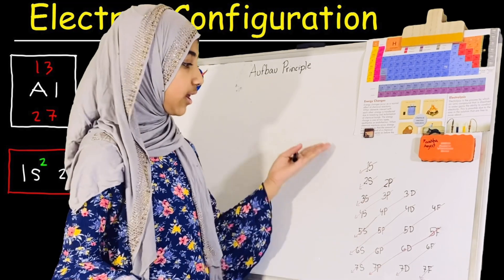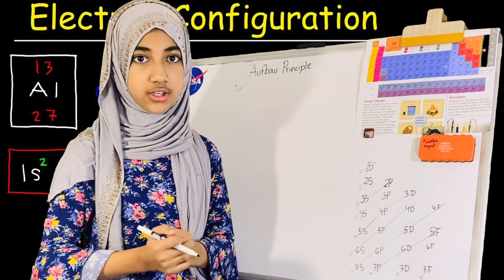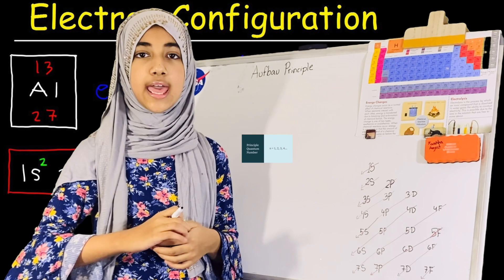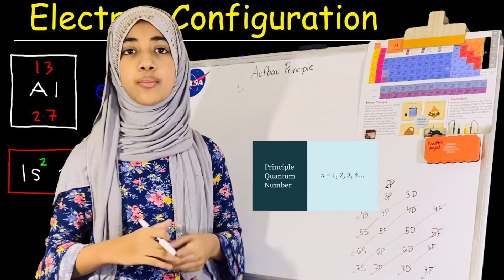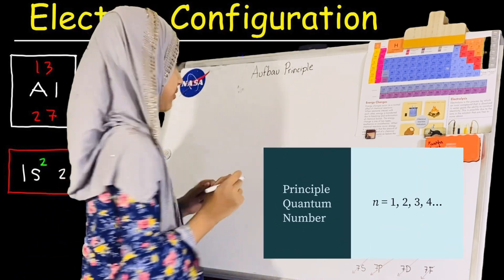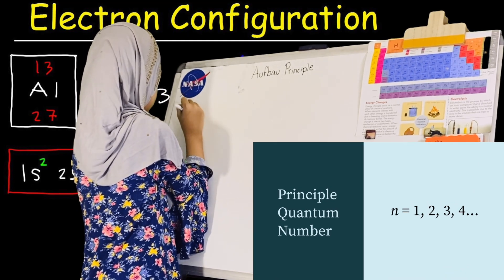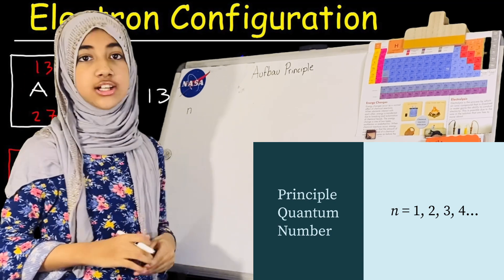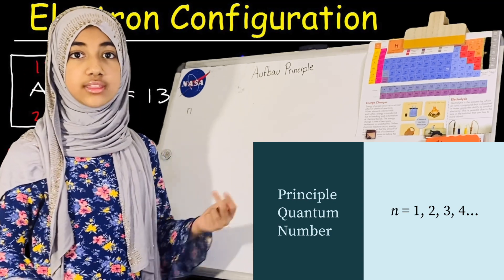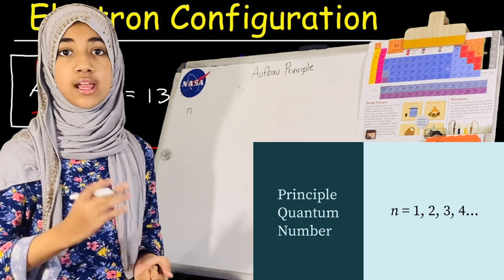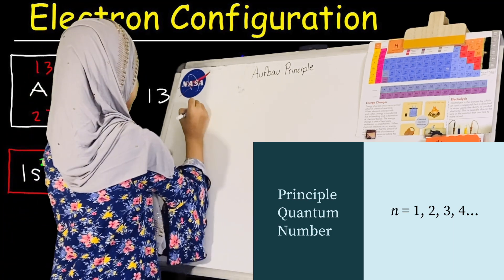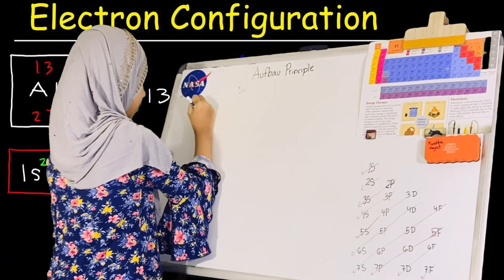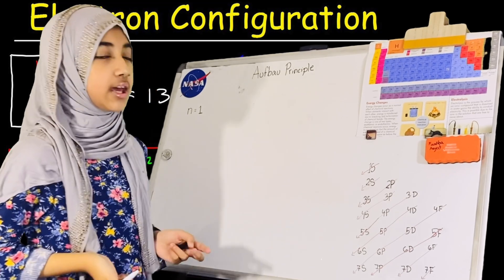On the first quantum number — what is the principal quantum number? This is usually represented with a lowercase n. The value of n starts from 1 and can go up to 7. So n equals 1 is our starting point, and now we're going to talk about our second quantum number.